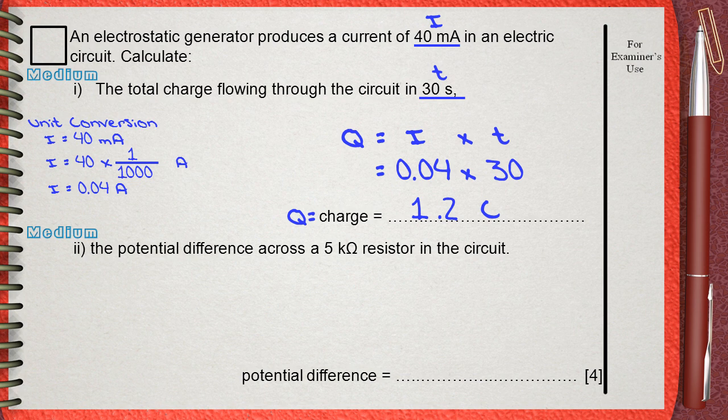Again, let's see the givens and the requests. We have a given here, which is 5 kOhms. This is the resistance R. Also the request is the potential difference. Potential difference is the voltage, which is V.